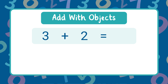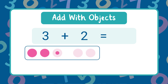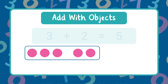Let's look at the number sentence three plus two. To find the sum, we will use circles as our objects. Start with three circles, now add two more circles, and count them all together. The sum is five, so three plus two equals five.